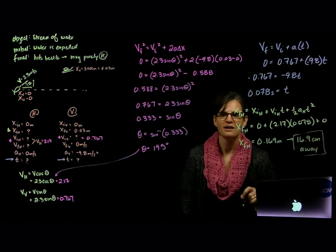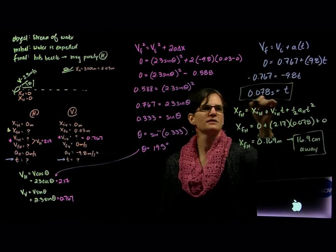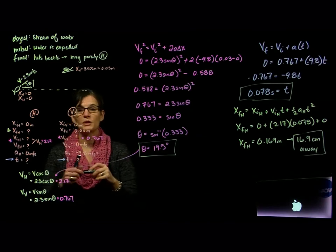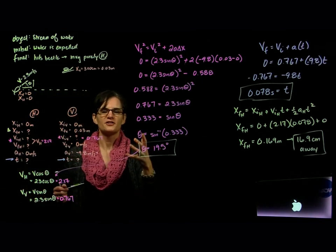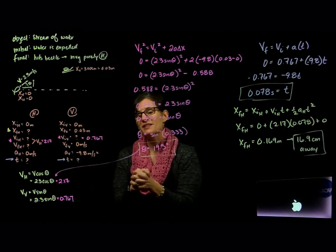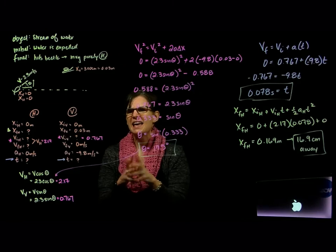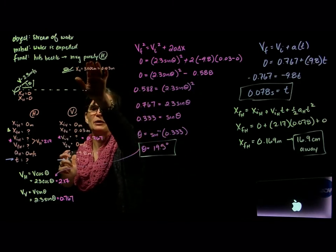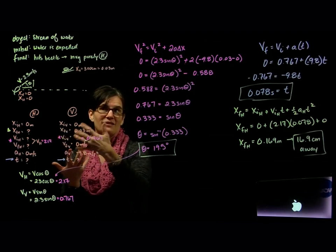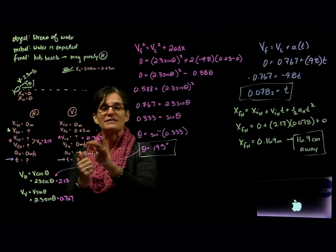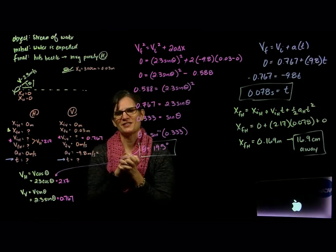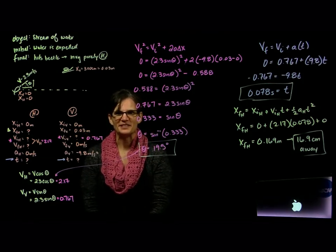There's a lot of work in this problem — lots of recognizing where we can capitalize on information we know. Understanding that we're in two dimensions at an angle, with initial velocities in both dimensions. The key trick is recognizing that if the water is moving purely horizontally when it hits the beetle, the final vertical velocity is zero — that gives us information that wasn't explicitly stated but required physics understanding to obtain. Good job.